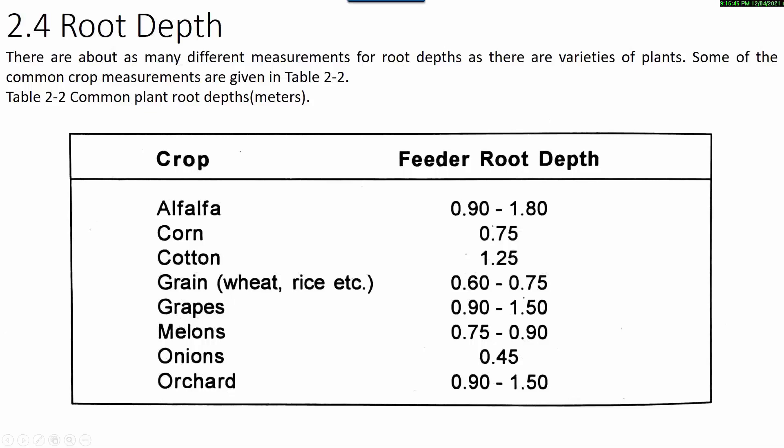Root depth. There are about as many different measurements for root depths as there are varieties of plants. Some common crop measurements are given in the following table. For crops such as alfalfa, corn, cotton, and onions, we have different feeder root depths. For example, for cotton the root depth is 1.25 meters.